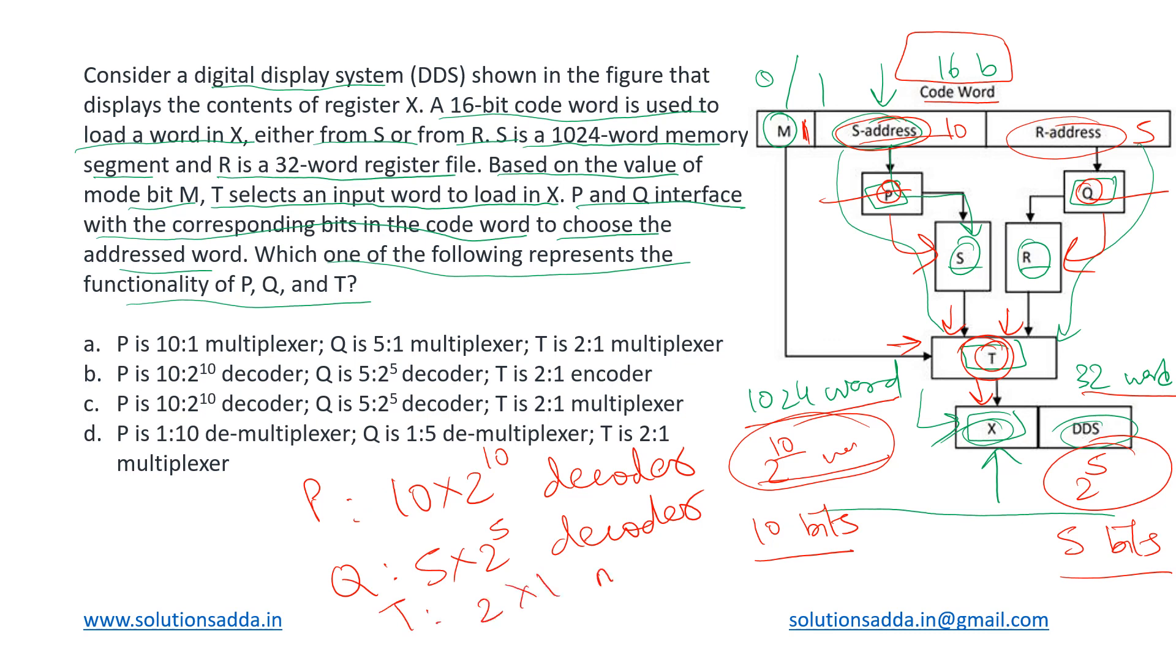So we have identified all of these devices and this corresponds to option C. P is a decoder, Q is a decoder, and T is a two cross one multiplexer. So this will be the correct answer.